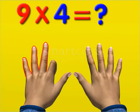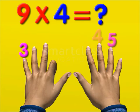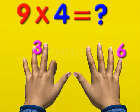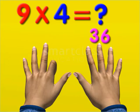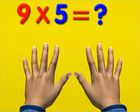The number of fingers to the left of the bent finger is 3, and the number of fingers to the right is 6. Thus, 9 times 4 is equal to 36. Now, to find 9 times 5, bend the fifth finger of your left hand,